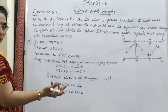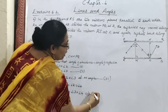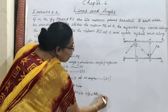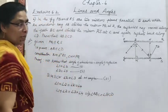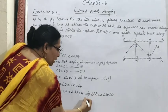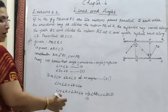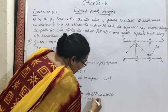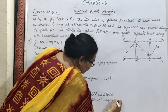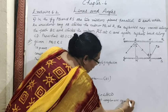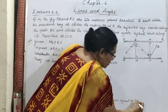From the figure, angle 1 plus 2 is angle ABC, and angle 3 plus 4 is angle BCD. So angle ABC equal to angle BCD — these are alternate interior angles. By this we can conclude that AB is parallel to CD.